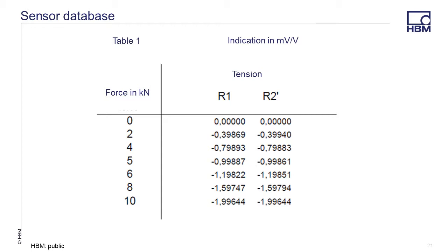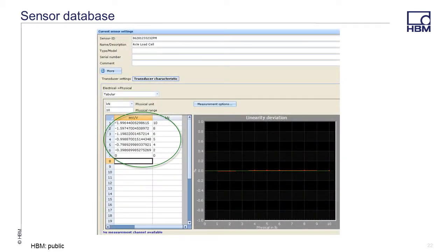If the sensor has calibration data, these values can be entered using the tabular setting. This is a sample calibration data from a working standard calibration. The left side of the table lists the calibration steps, and the right side lists the electrical output of the transducer. If several values are used to characterize the sensor, the tabular electrical physical option can be selected. Enter the calibration table values — it is also possible to measure the values if using known loads. The graph on the right indicates the linearity deviation. The values here show the sensor has very little linear deviation. The tabular setting is useful for sensors that are not linear or have different output slopes for tension and compression.